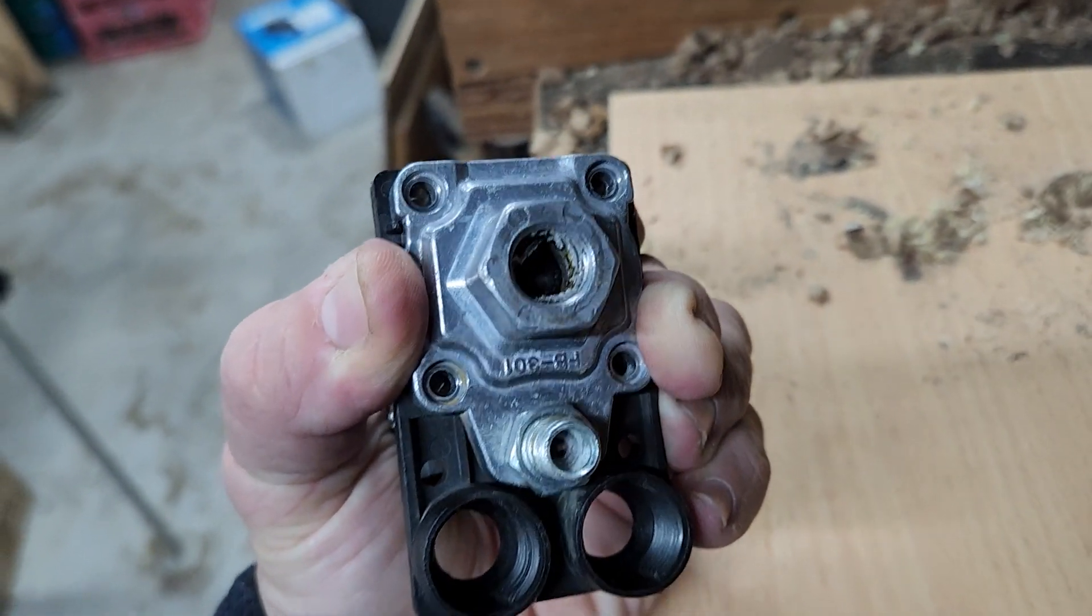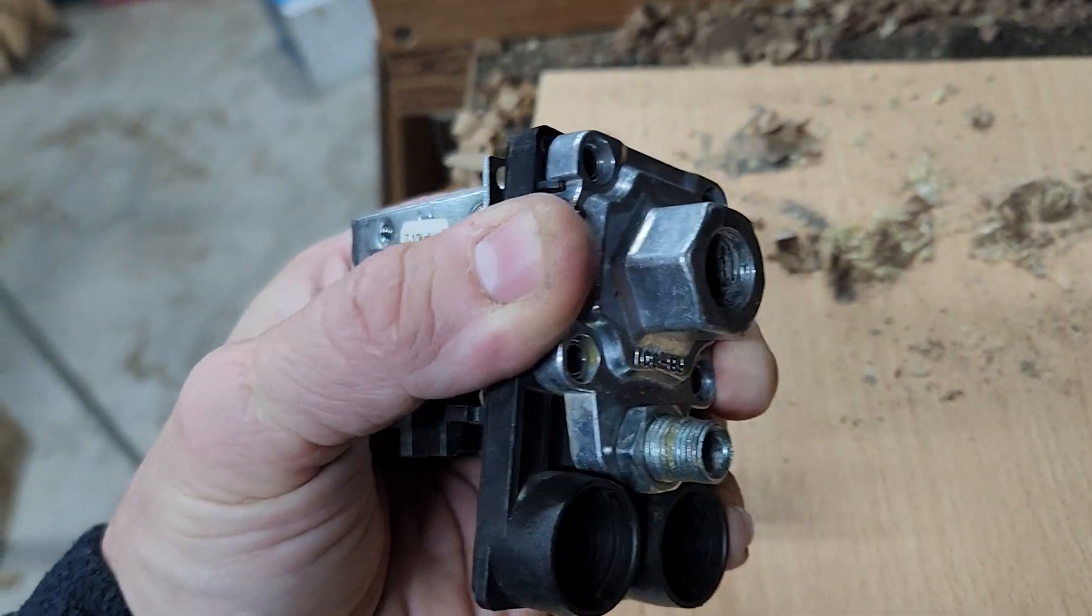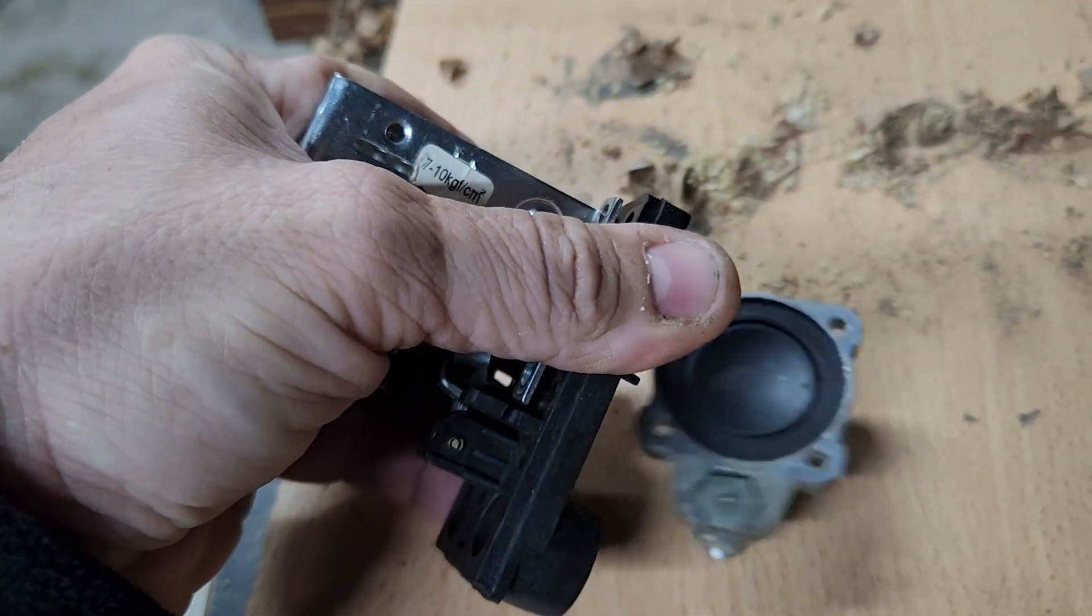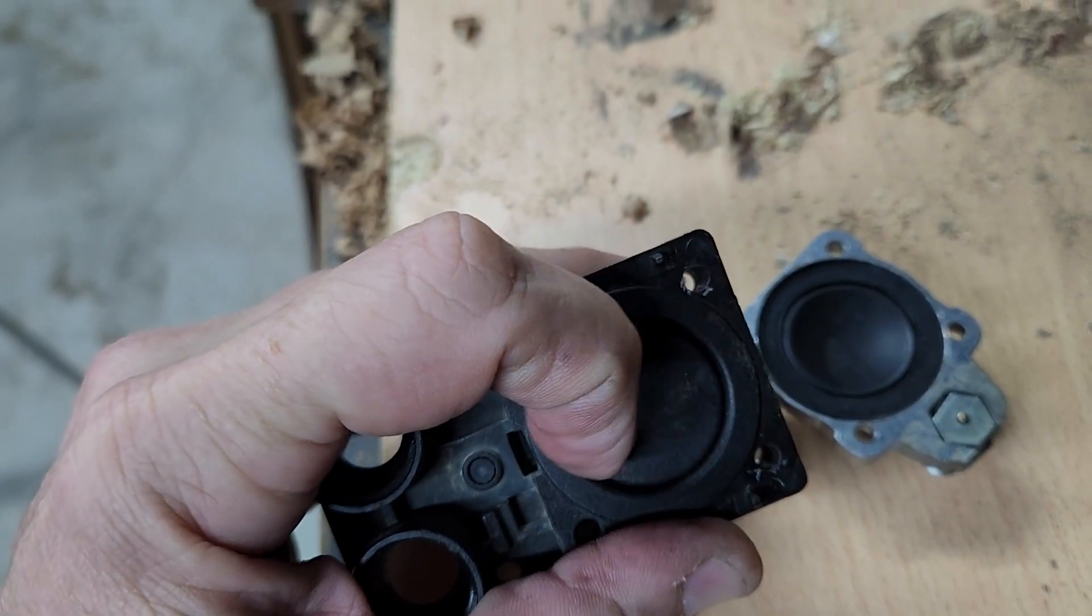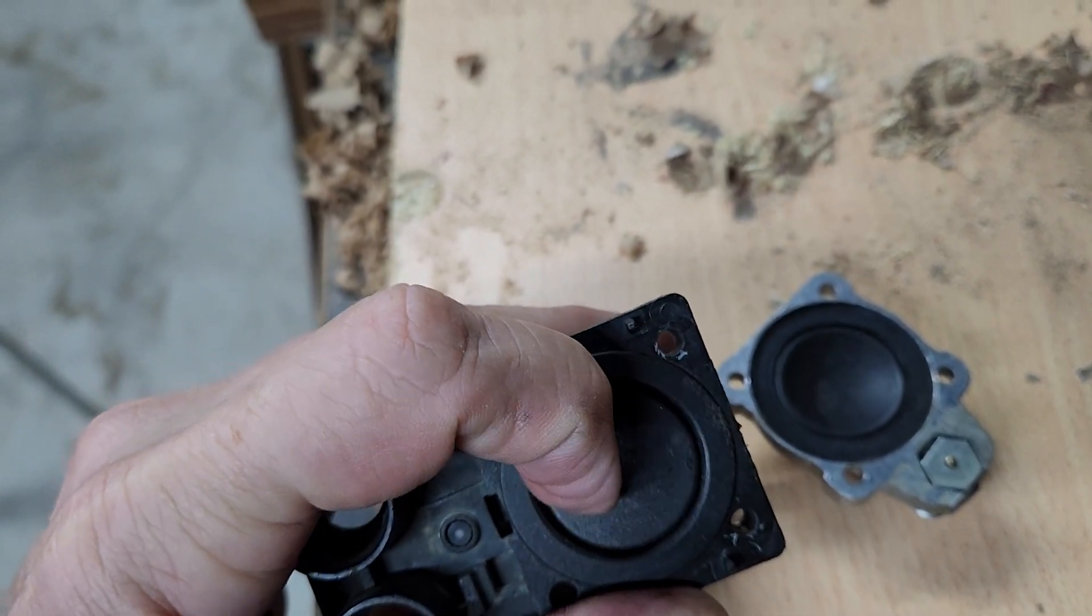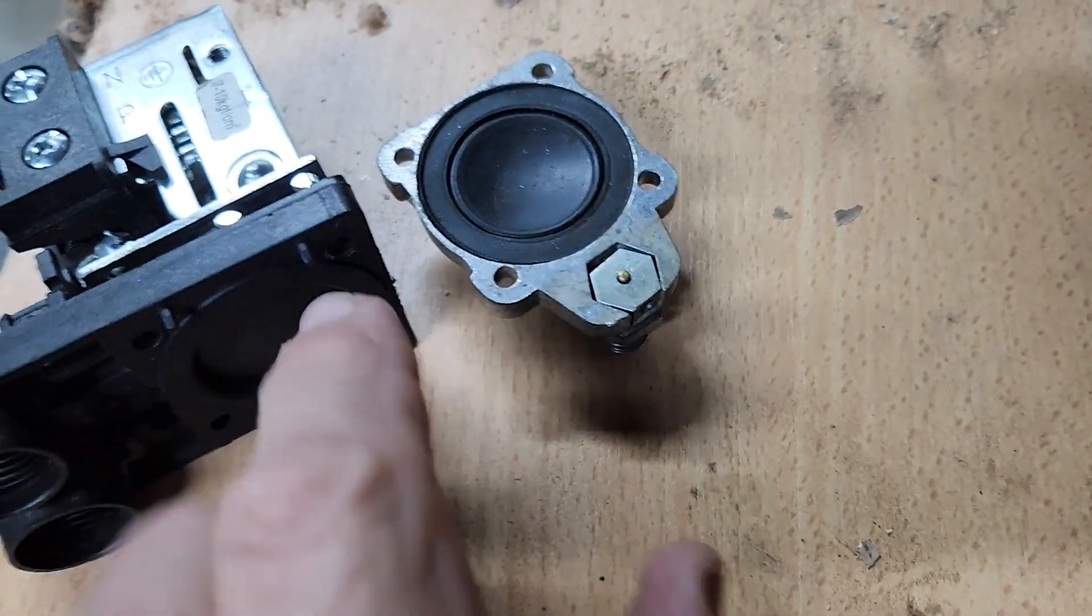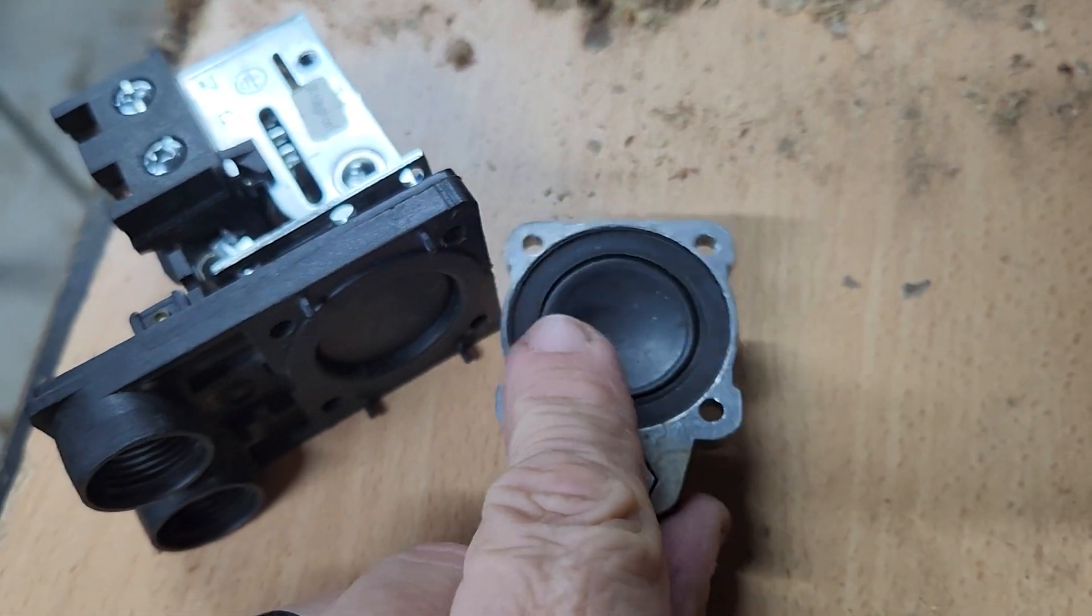Just giving you another view of this pressure switch. So on the bottom here when you open this up you'll see it has a big plastic button, and that is actuated by this diaphragm.